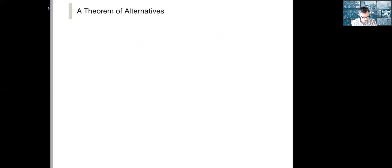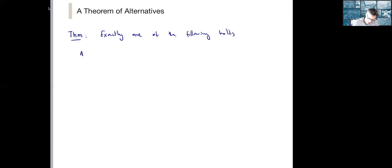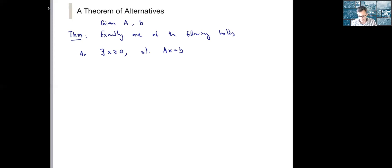Let's get to our first result. Given a matrix A and a vector b, the theorem says exactly one of the following holds. Statement A: there exists an x non-negative such that Ax equals b. Statement B: there exists a vector z such that z transpose A is a non-negative vector and z transpose b is strictly negative.